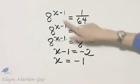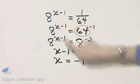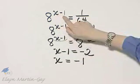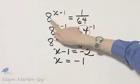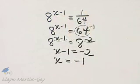You check by replacing your proposed solution for x in the original equation. Notice if x is negative 1, negative 1 minus 1 is negative 2, and you have 8 to the negative 2 is 1 over 64, a true statement.